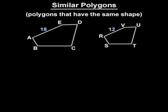Similar polygons are polygons that have the same shape. For example, in the diagram shown, pentagon ABCDE is similar to pentagon RSTUV. Notice that the symbol we use for similarity is a squiggly line.